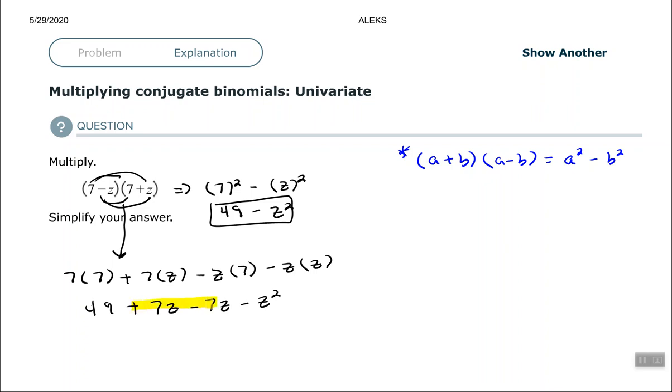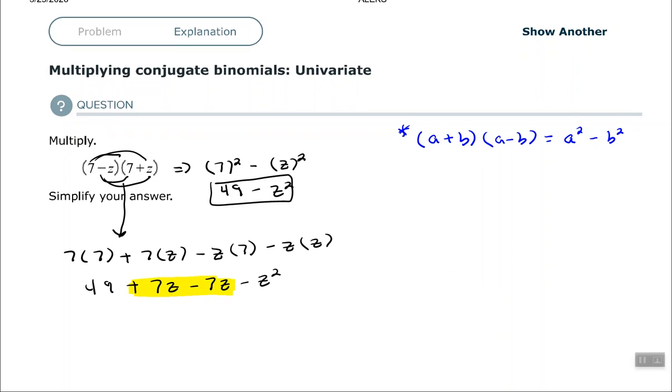And as we've done before, combine the like terms. As you can see, they are exact opposites. It's positive 7z minus 7z is zero z. So that cancels each other out, and we're left with 49 - z squared, which is the exact same answer that we had up here by using our formula or shortcut there.